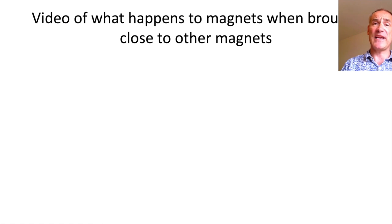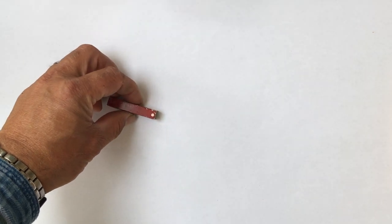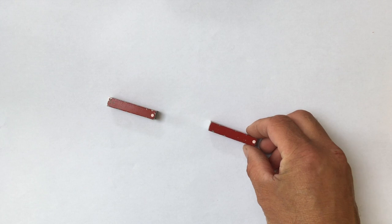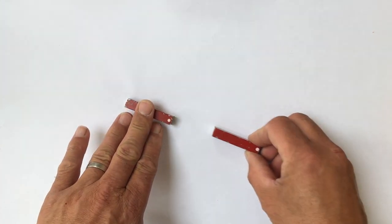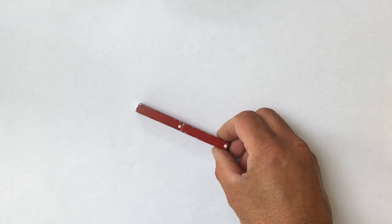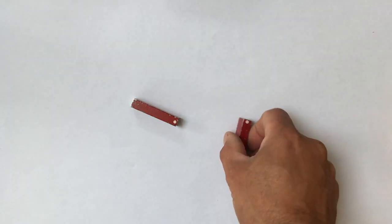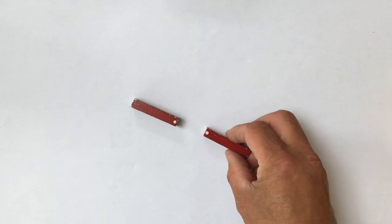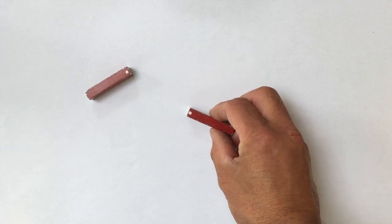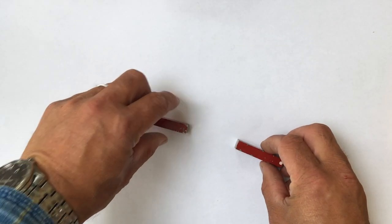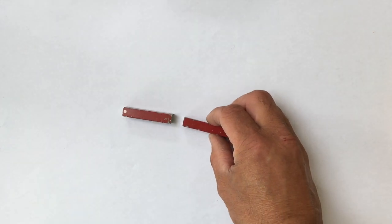I want to now show a short video to look at what happens when we bring magnets close together. Magnets have north and south poles — the white spot on these magnets represents a north. If I bring a north and a south pole together you can see they attract. If I now turn it round and have north and north, they are like poles and they repel. Equally if I have south and south they also repel — those are like poles.